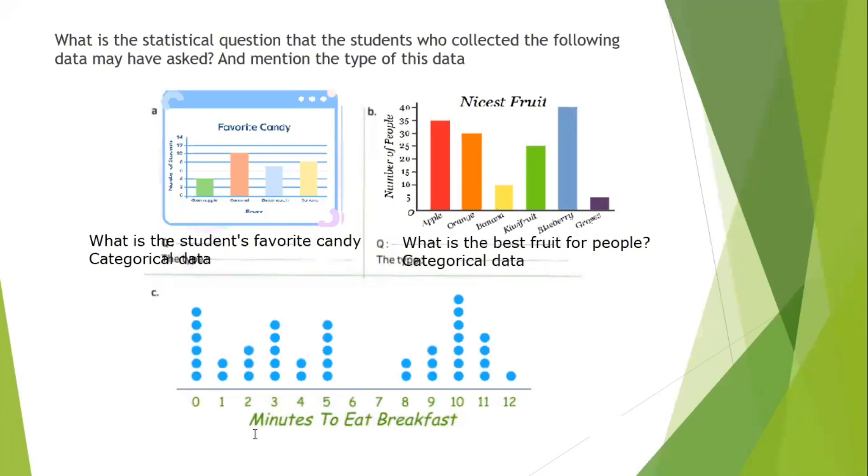Number three, this is the dot plot. And this number line shows minutes to eat breakfast. The time in minutes that we need to eat the breakfast. So what is the question? I can say: how many minutes does it take students to eat breakfast? The type of the question is numerical data. Why? Because I say the minutes in numbers. So this is numerical data.